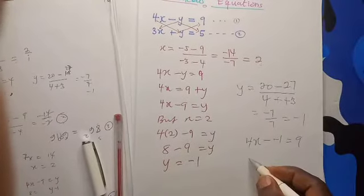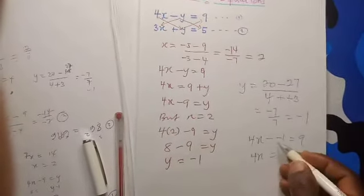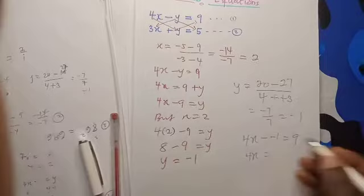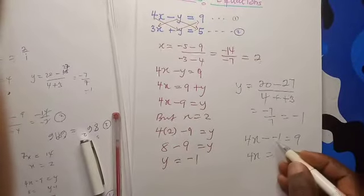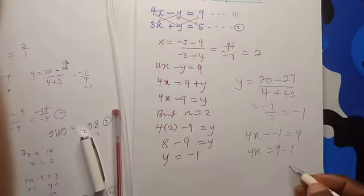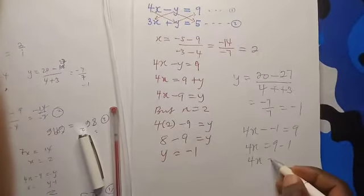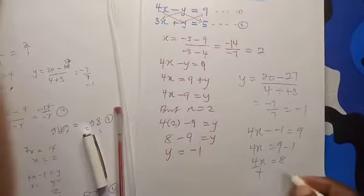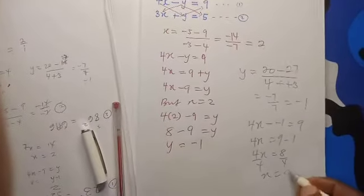So if you cross it, it becomes 9 minus 1, and that becomes 4x equals 8. If you divide by 4, your x will still give you 2. So you can solve for any one of the variables and find the other.